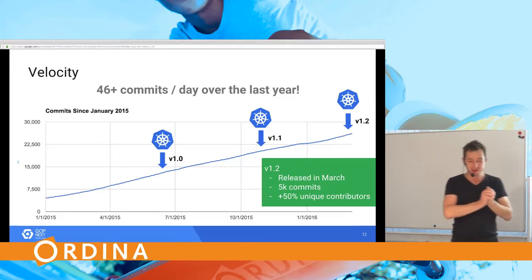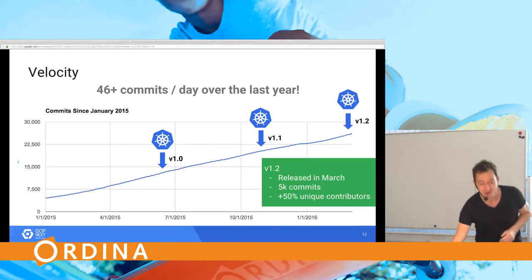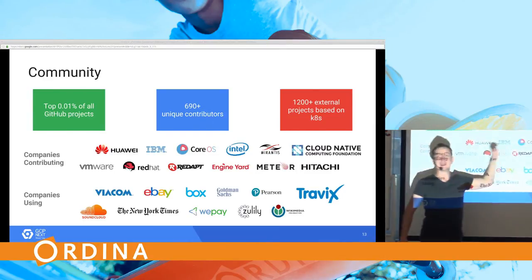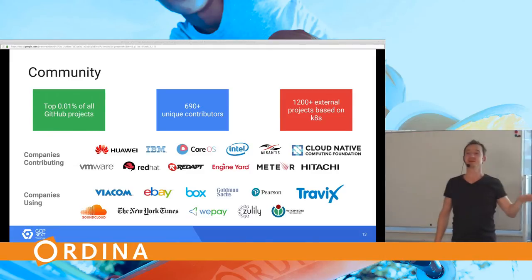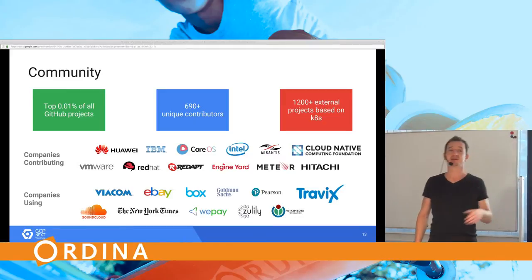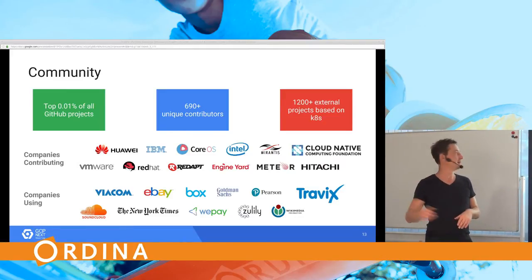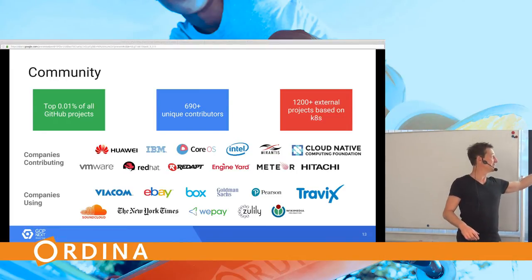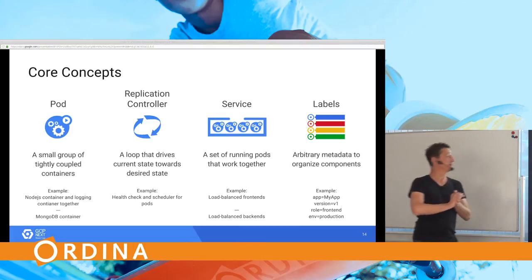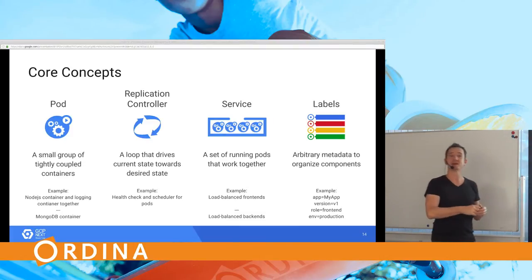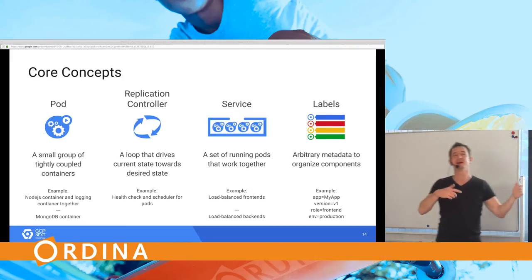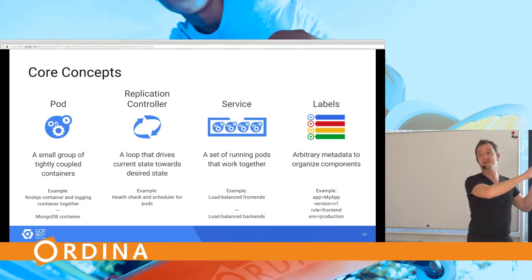There are 5,000 commits a week, with a lot of companies and people contributing. Now let's get a bit more technical and then I'll go to a demo. We have pods, replication controllers, services, and labels. There are many other concepts as well, but these still form the basis. What is a pod? A pod - literally a herd of whales, since the whale is Docker's logo - contains one or more Docker containers.